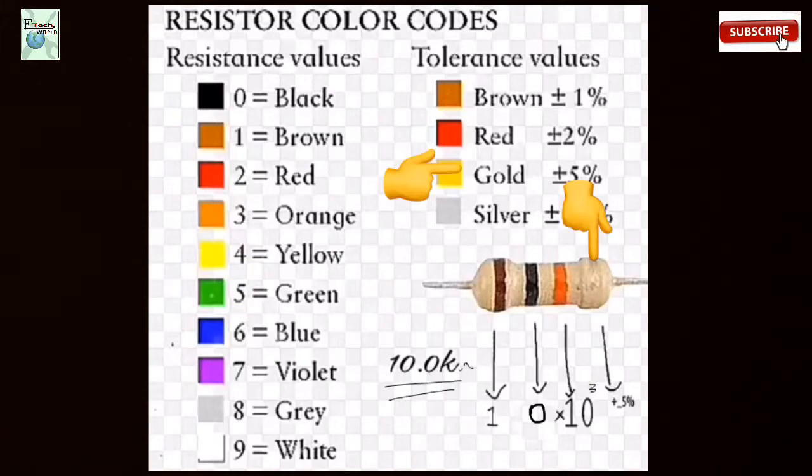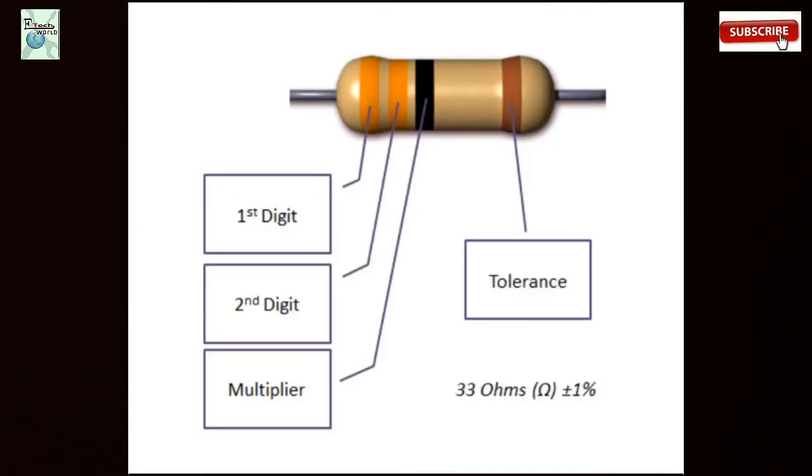The final code is gold. This is the tolerance, plus or minus 5 percentage. So the value of the resistor is 10 kilo ohm. In this resistor color coding, the first color is the first significant value,